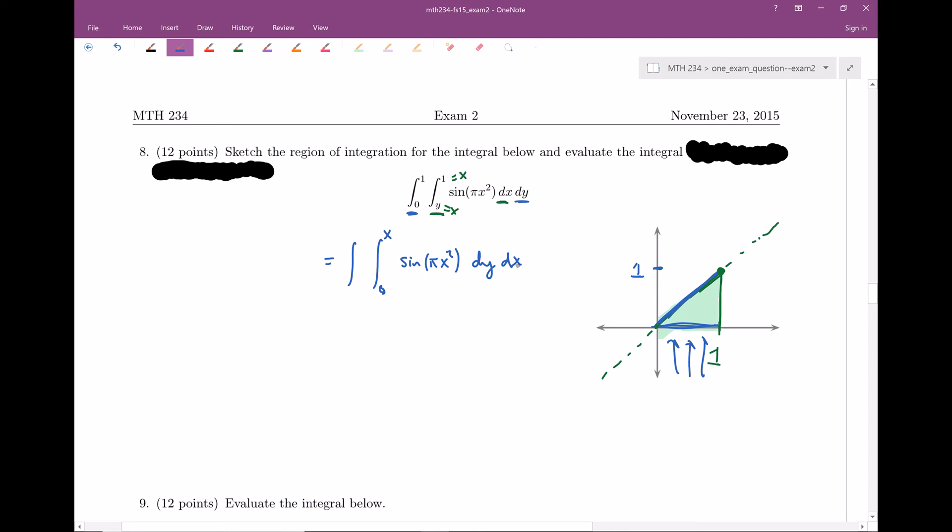Now I need to integrate with respect to x. So the smallest x value in my region is 0 and my largest x value is 1. So now we've set up a corresponding integral, the bounds at least, with the order reversed. So now let's go ahead and evaluate.